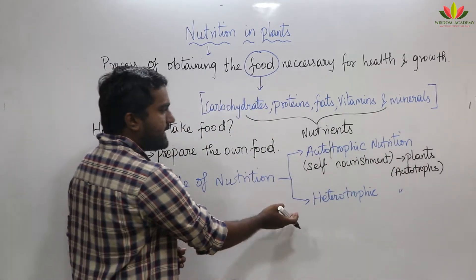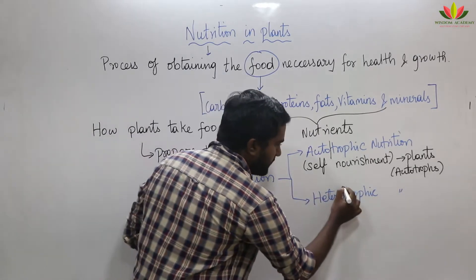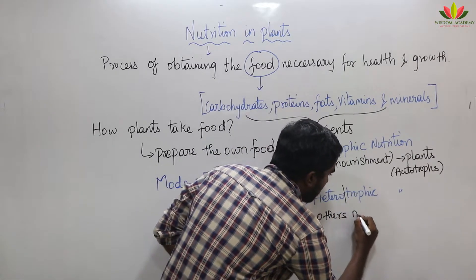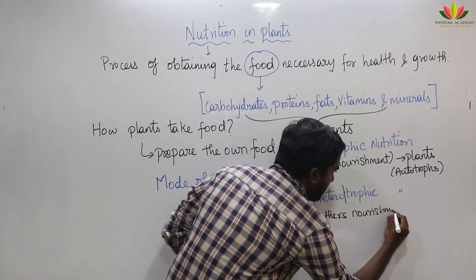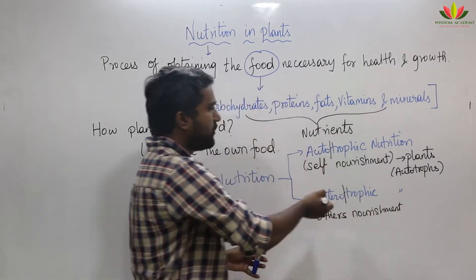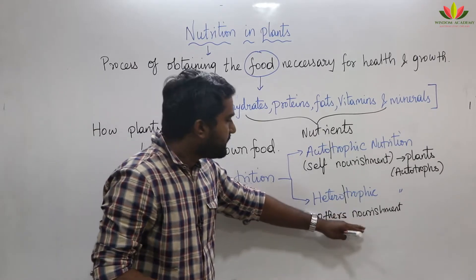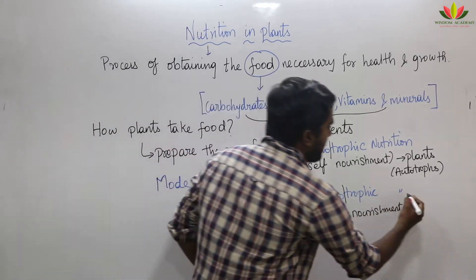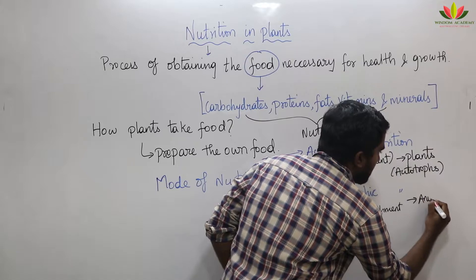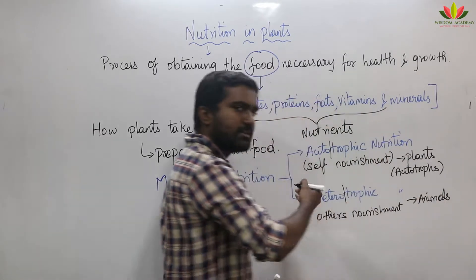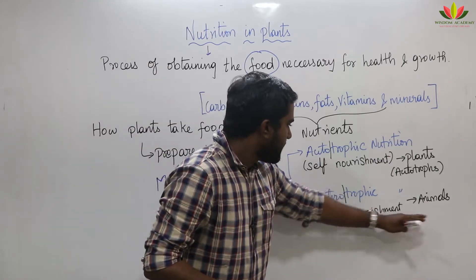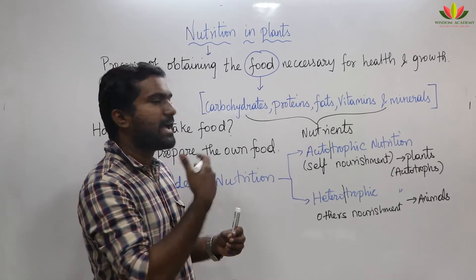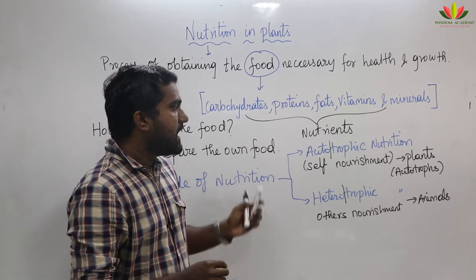The next one is heterotrophic nutrition. In heterotrophic nutrition, they will get the nourishment from others. For example, animals will come under heterotrophic nutrition. Any organism which depends on another organism for food is called a heterotroph.